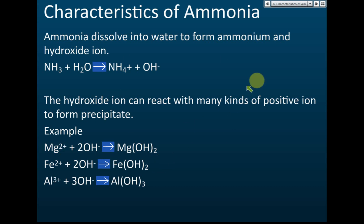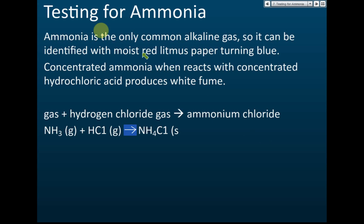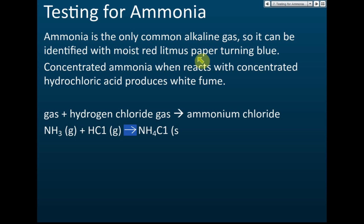Now for testing ammonia: ammonia is the only common alkaline gas — most other gases are either acidic or neutral. Because it is the only alkaline gas, testing is straightforward. We use a moist red litmus paper and insert it into the ammonia gas — the red litmus paper will turn blue.